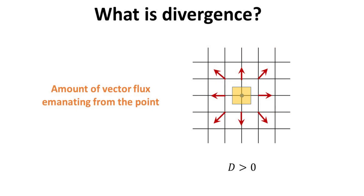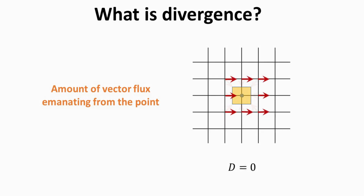At any point in the vector field, the divergence is the amount of vector flux emanating from it. As illustrated here, when the vector flux is emanating from the point, we say it has positive divergence, and is often called a source. On the other hand, when the vector fluxes are pointing into the point instead, we say it has negative divergence, and is often called a sink. If the amount of vector flux into and out of the infinitesimal volume balances each other, then the point has zero divergence.